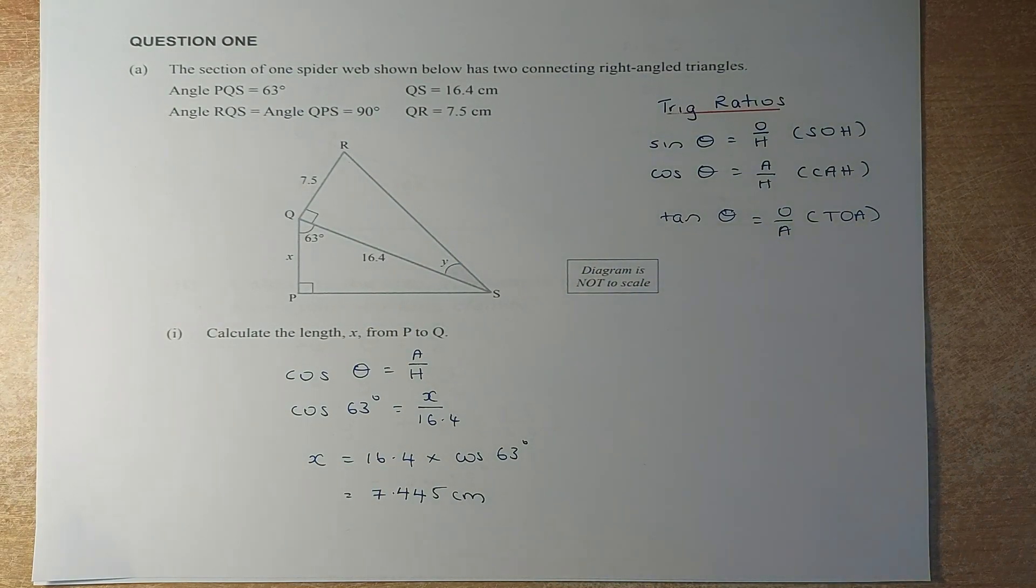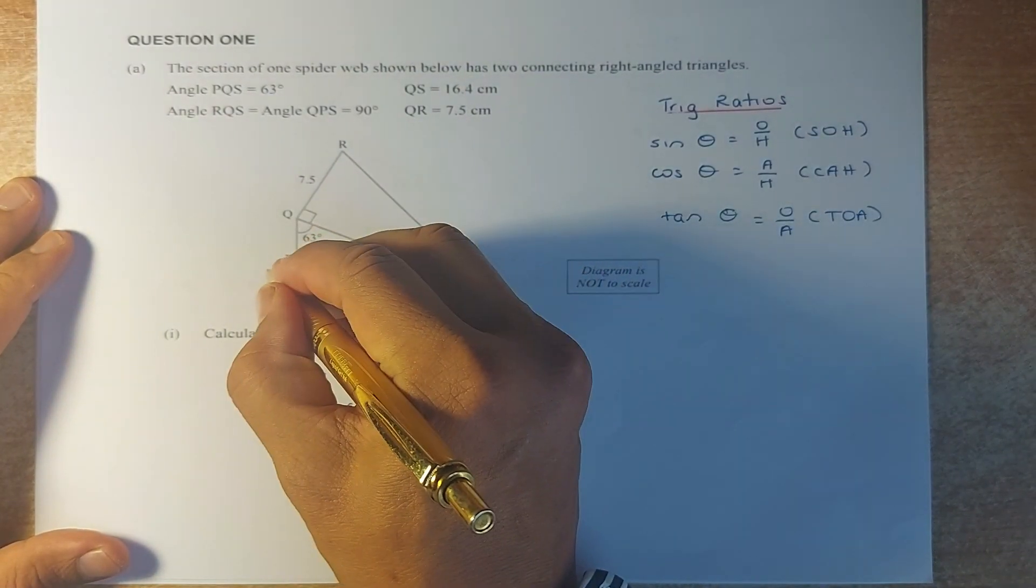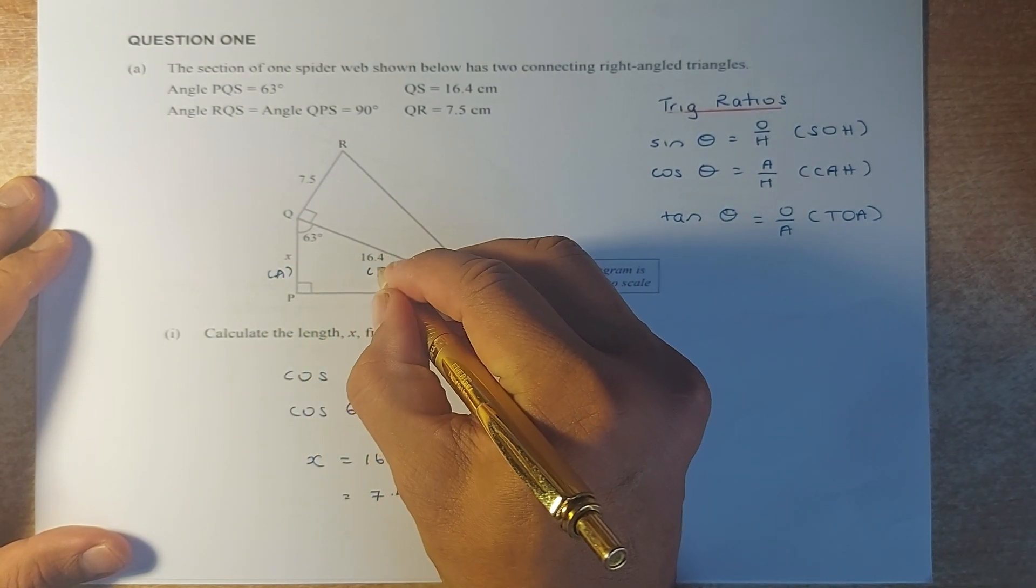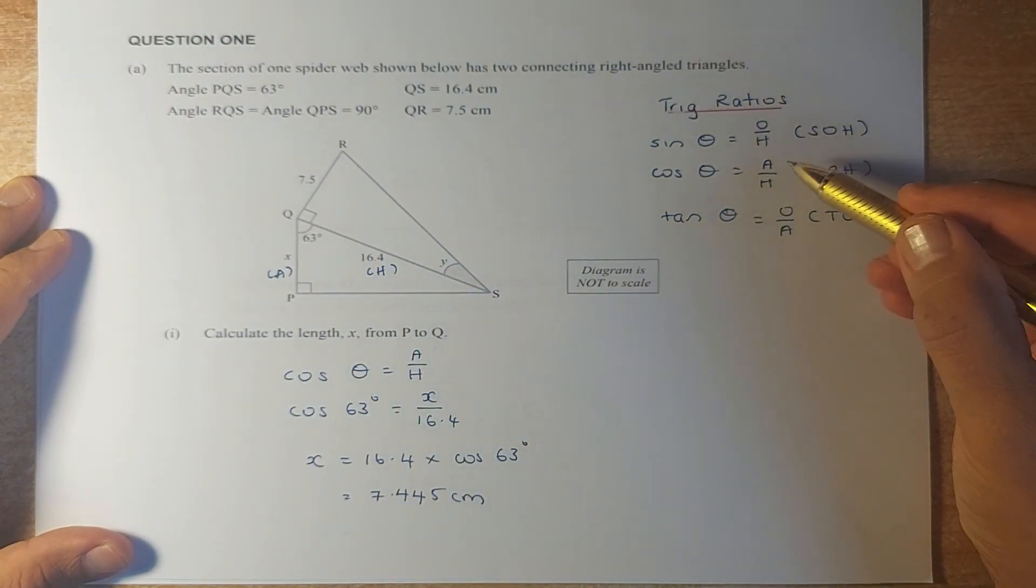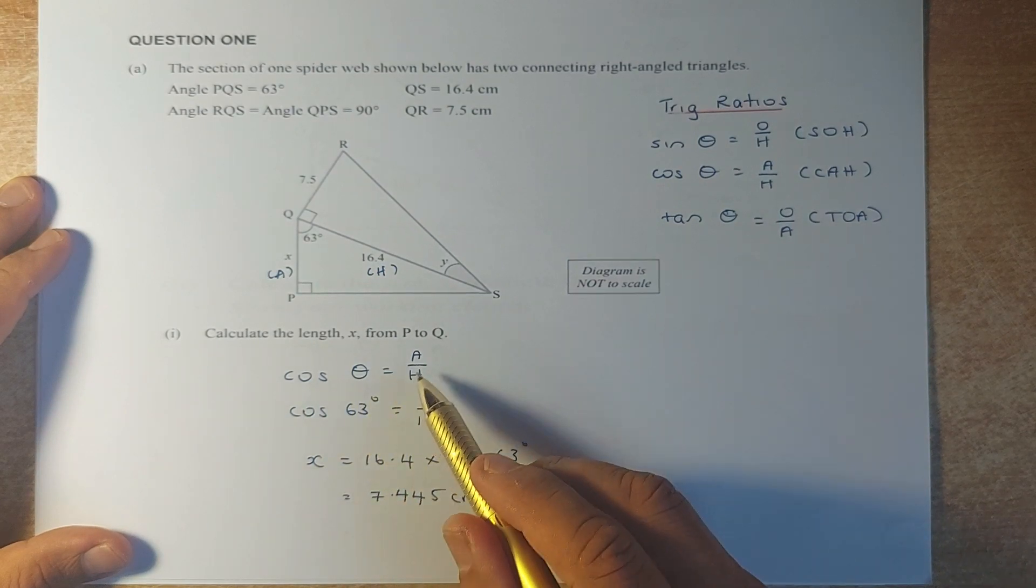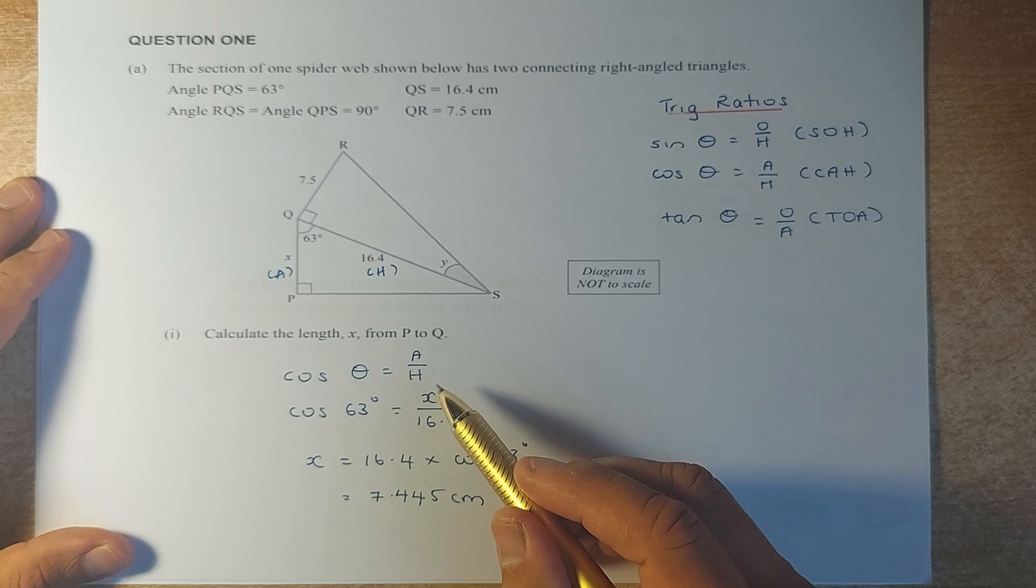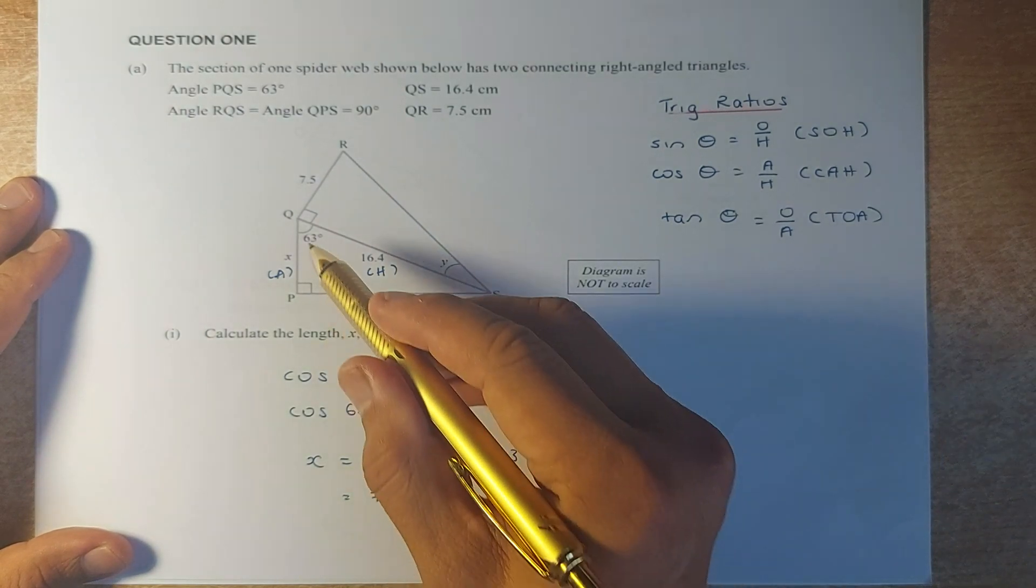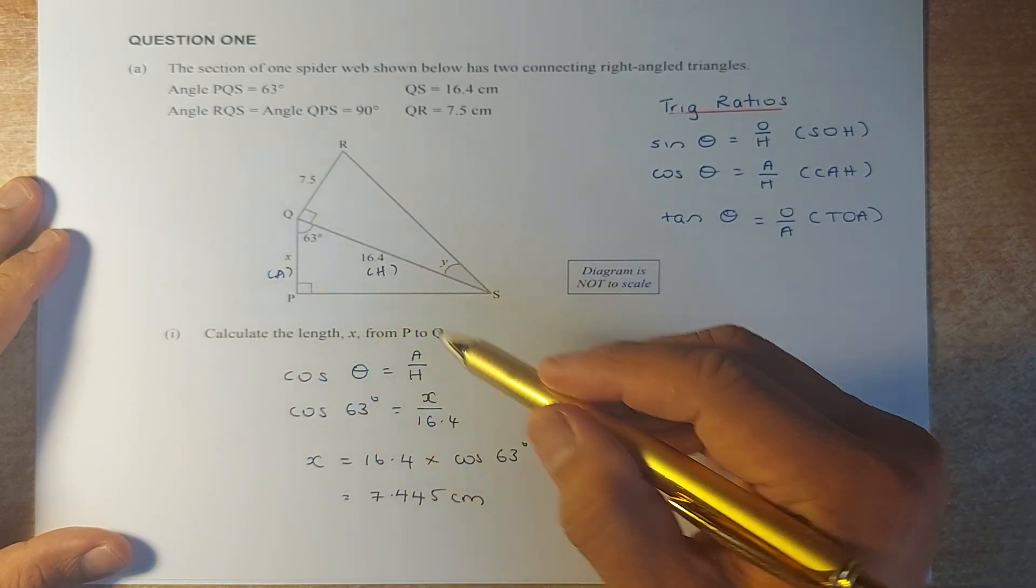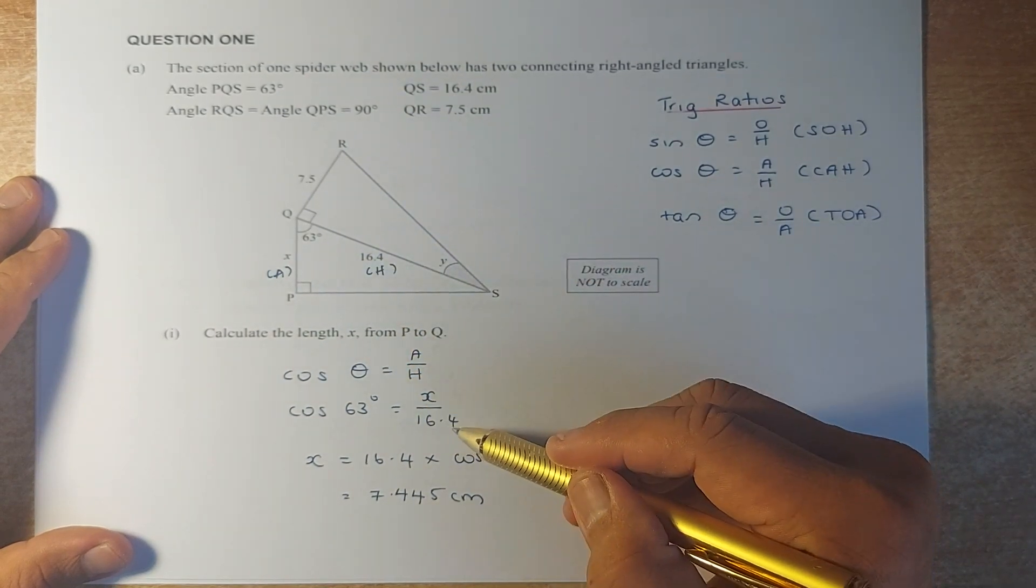The first thing you do, you're going to label the graph. This angle here, so this must be adjacent, and 16.4 opposite 90 degrees, this must be hypotenuse. So if you look at A and H, you have to use the cosine formula. So cosine theta is adjacent over hypotenuse. The next step, we are going to substitute the values. Instead of theta, the angle is 63 degrees. X is what we're going to find. A is what we're going to find. So we'll rewrite it as X and the hypotenuse H is 16.4.